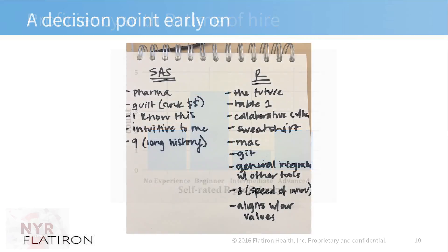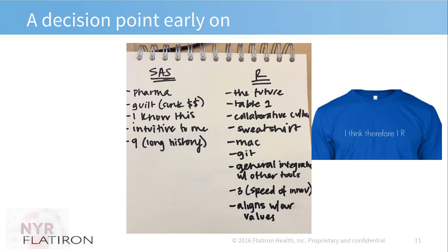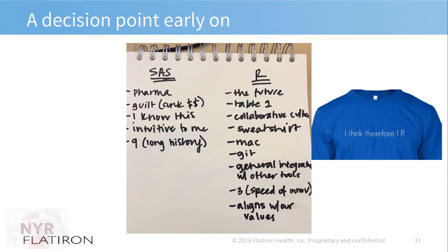Early on last year, there was a decision point. One late night, Melissa and I were talking and saying, should we be using SAS? Should we all be using R? Should we be using a combination of both? Melissa actually made a pro and con list — she had cleaned out her desk last week and found the original. On the SAS side, things like: we collaborate with pharmaceutical companies who are heavy SAS users, we had spent money on a license, and it was the background for some team members.